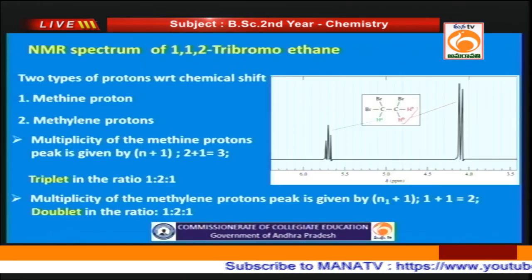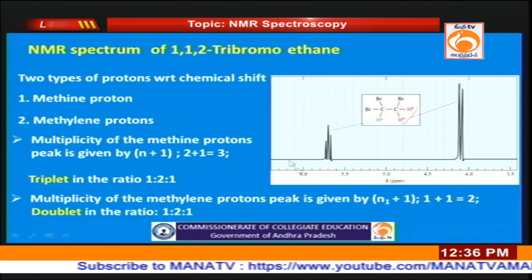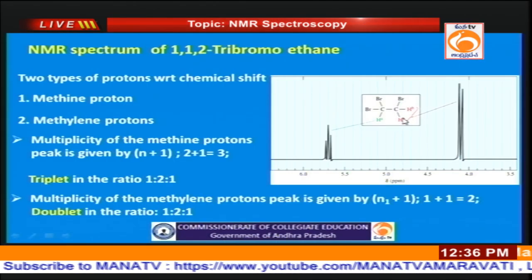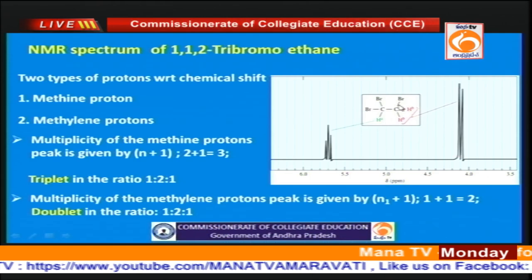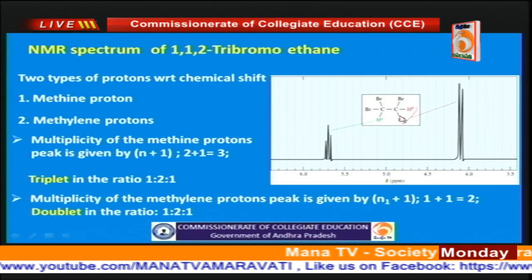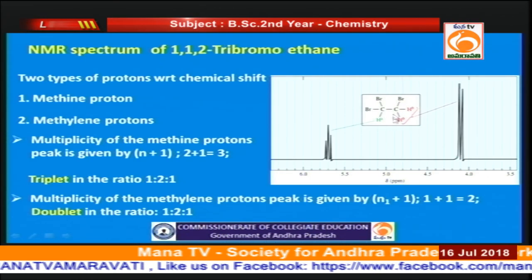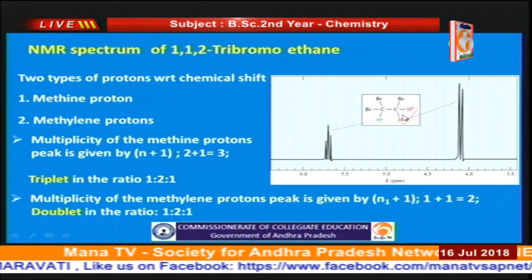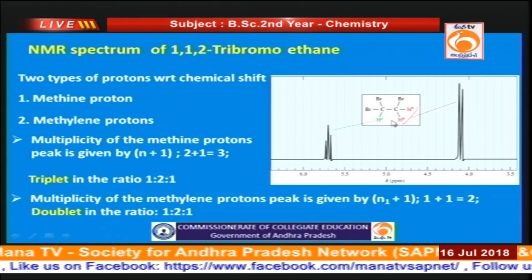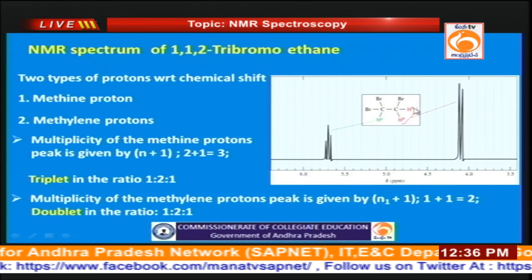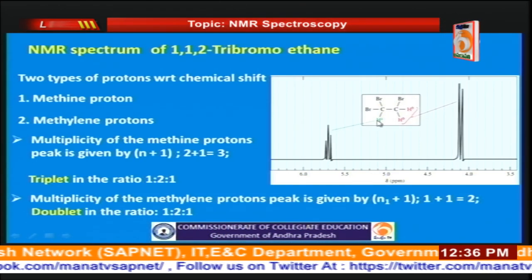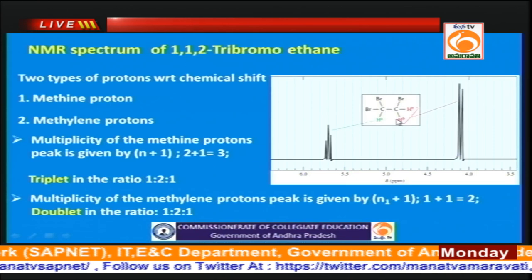In the NMR spectrum of 1,1,2-tribromoethane, there are two types of protons: the methine proton and the methylene proton. For the methine proton, the number of neighboring protons equals 2, so we get a triplet. For the methylene protons, the number of neighboring protons is 1, so we get a doublet.